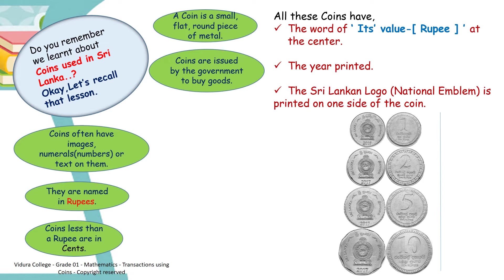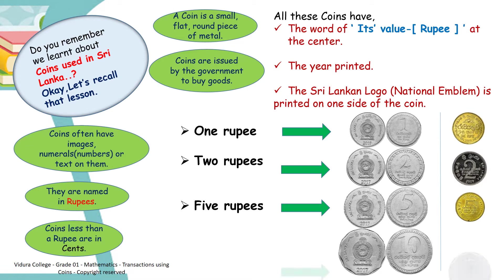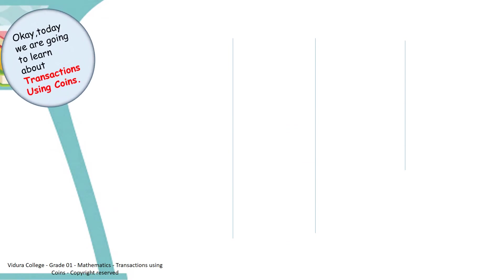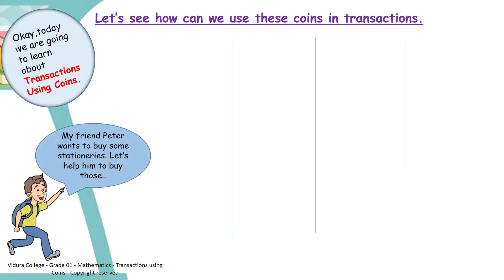Let's recall the coins that we learnt. We learnt 1 rupee, 2 rupees, 5 rupees, and 10 rupees. Today we are going to learn about transactions using coins. Let's see how we can use these coins in transactions. My friend Peter wants to buy some stationeries. Let's help him to buy those stationeries.